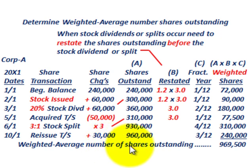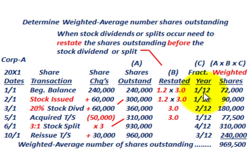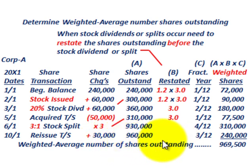That takes care of our problem where we had to do reporting and calculate earnings per share for common stock, dealing with preferred stock dividends and extraordinary gains and losses, and determining the weighted average number of shares outstanding. That sums up our problem.